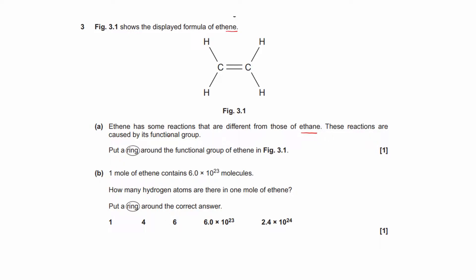These reactions are caused by its functional group. Put a ring around the functional group of ethene. The functional group is this carbon-carbon double bond. This is what makes it an alkene when it has a double bond. A functional group is basically the set of atoms inside the molecule that takes part in its chemical reactions. It gives it its chemical properties. So in alkenes, or specifically ethene, it's the carbon-carbon double bond.